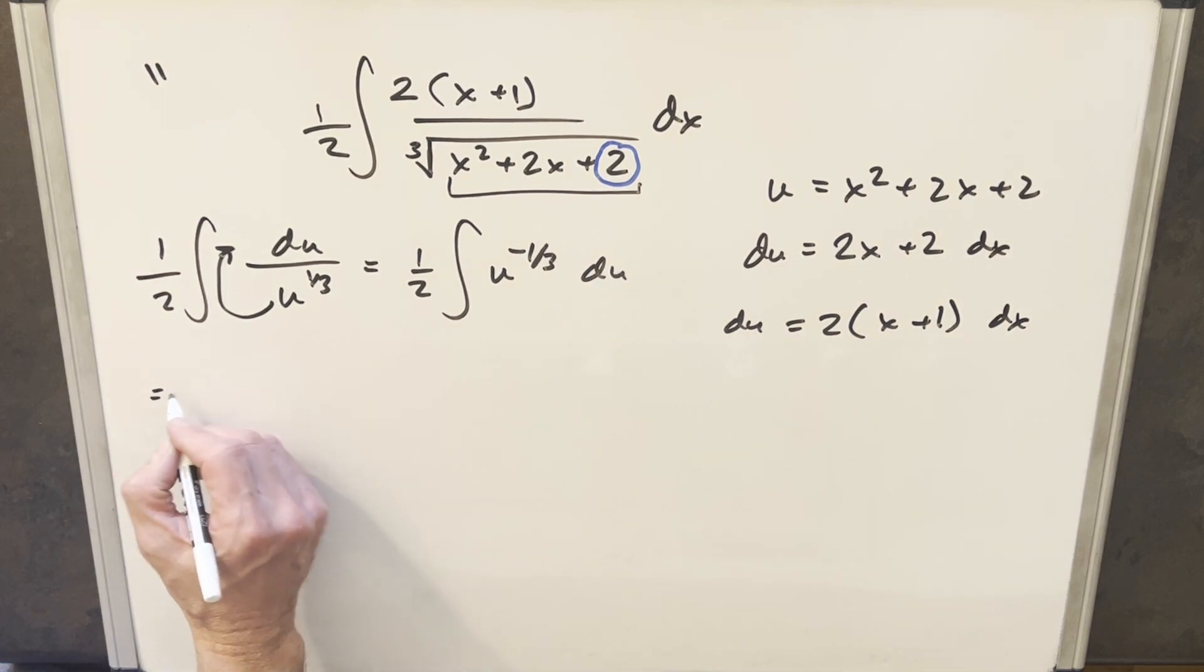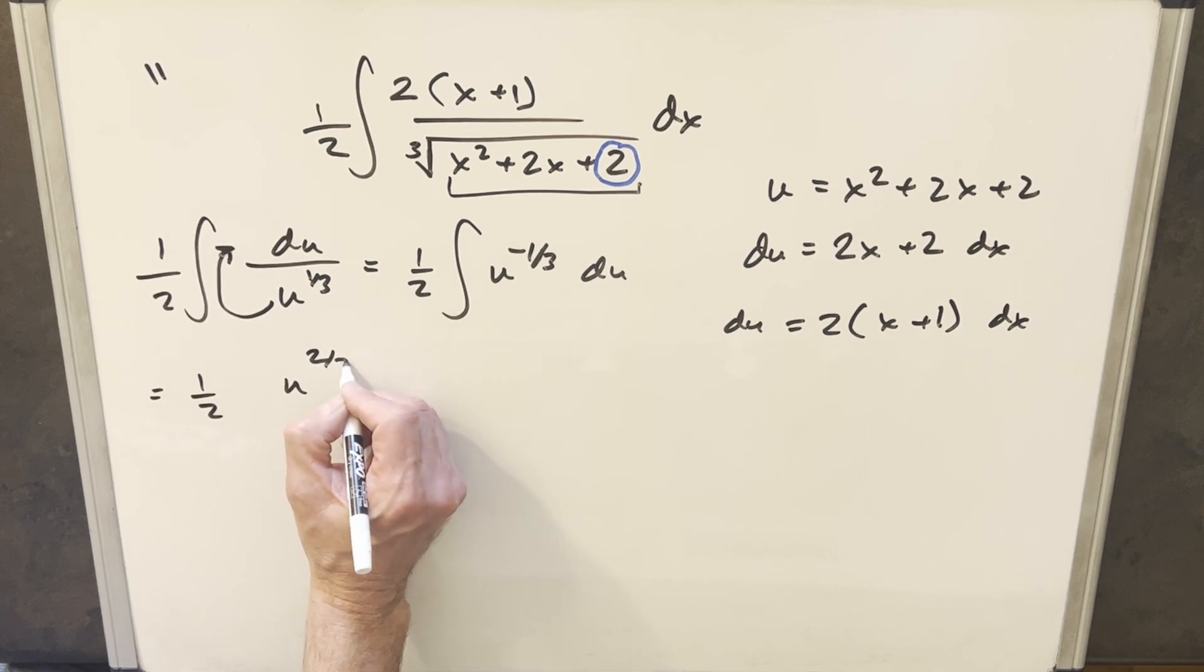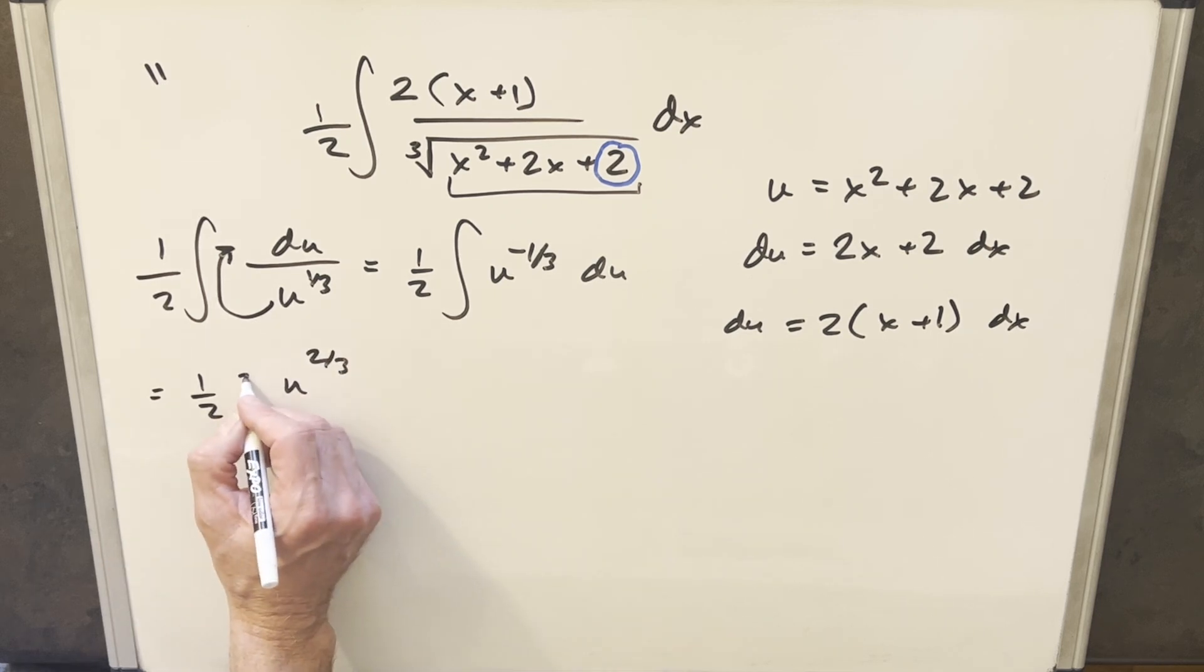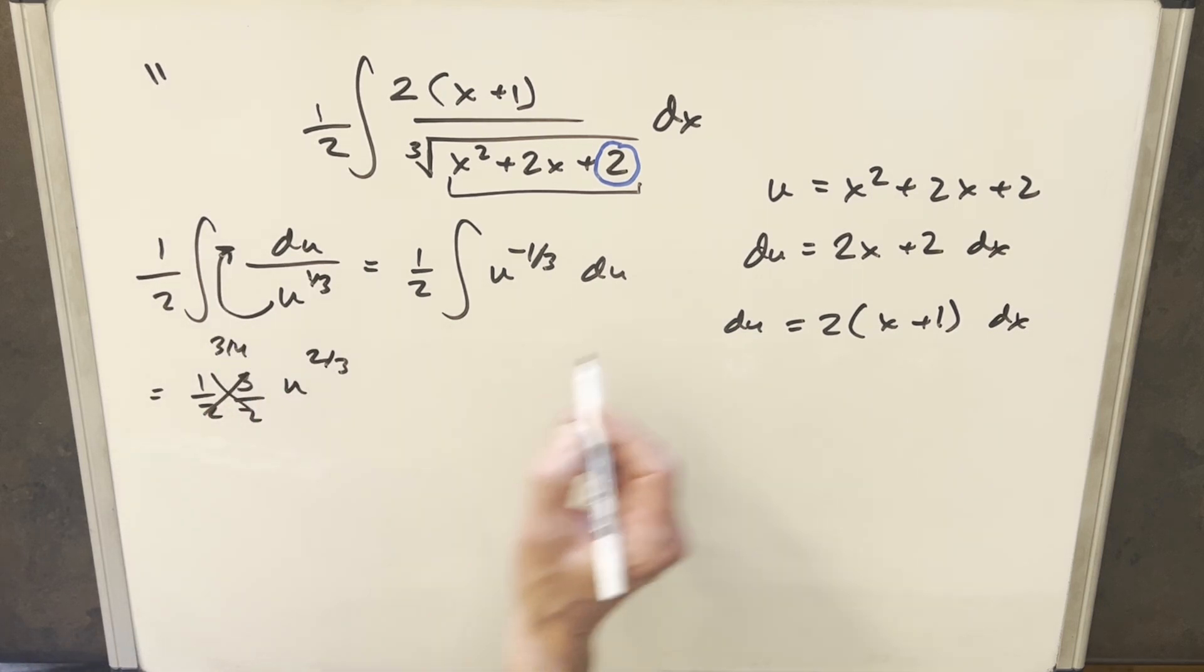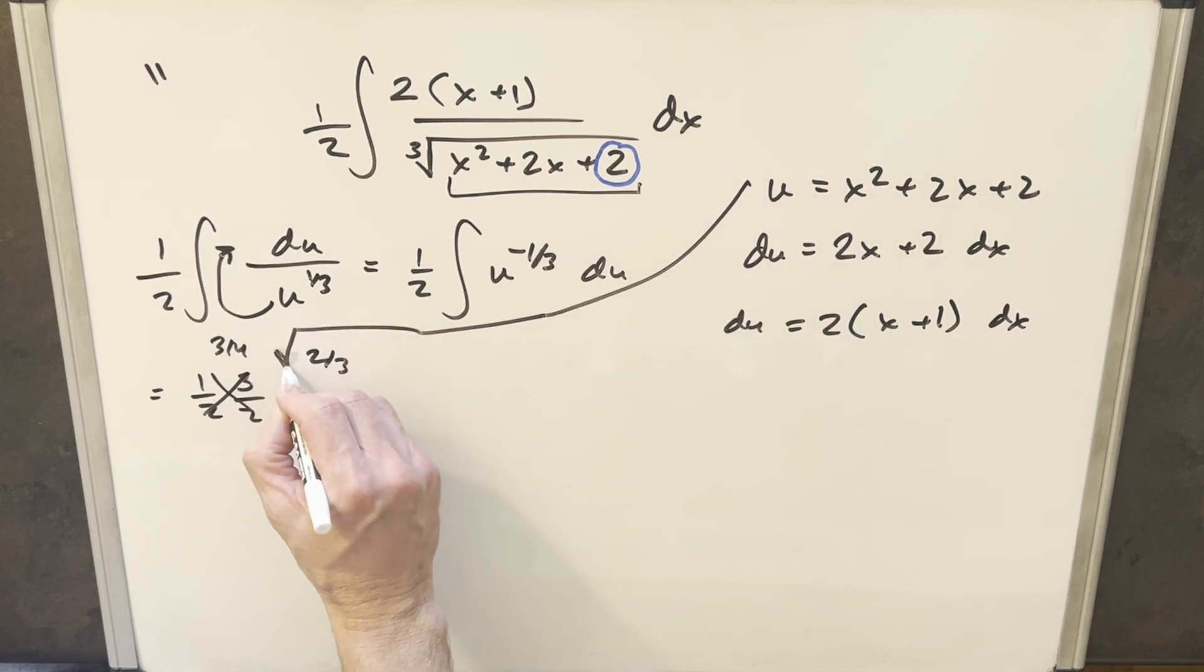And now I'll just go ahead and integrate. So we're going to have 1 half. This is going to become u to the 2 thirds. Take the reciprocal of this, and we have 3 halves here. But multiplying this together, this is going to give me 3 over 4 here. And so we just need to back substitute in order to finish this thing off.